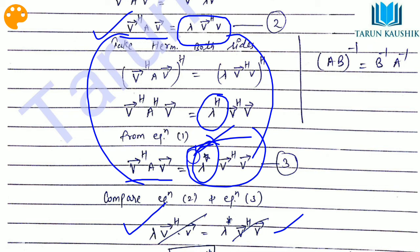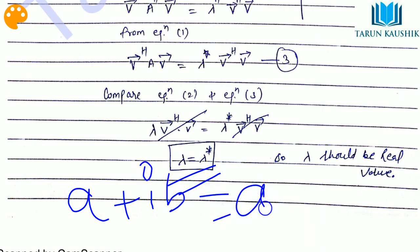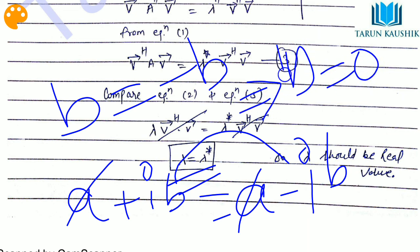Now I assume lambda equals a plus ib, so its conjugate lambda^* equals a minus ib. Setting lambda equal to lambda^* means a plus ib equals a minus ib. The real parts give a equals a, which is always true. The imaginary parts give ib equals minus ib, meaning b equals minus b.